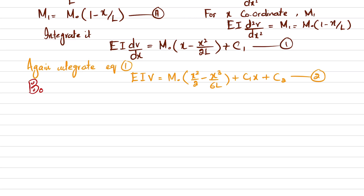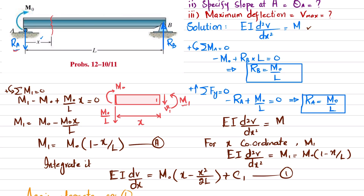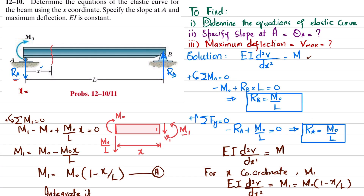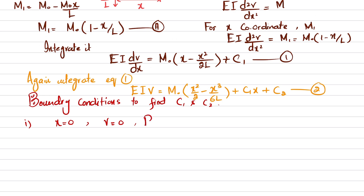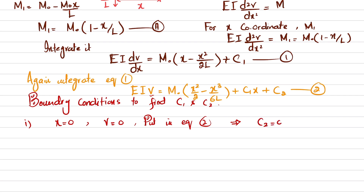Applying boundary conditions to find C₁ and C₂. First boundary condition: at x = 0, deflection v = 0 (roller support at A). Substituting into equation two: all terms become zero and v = 0, so C₂ = 0.